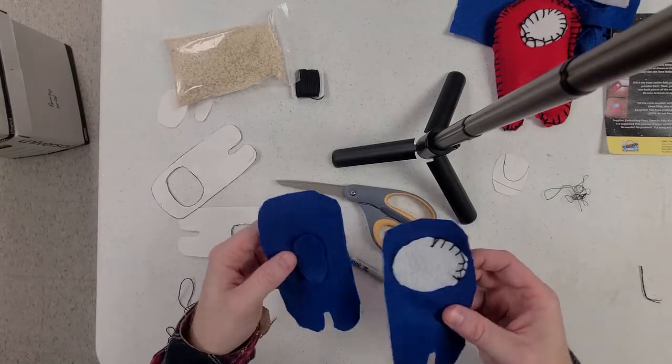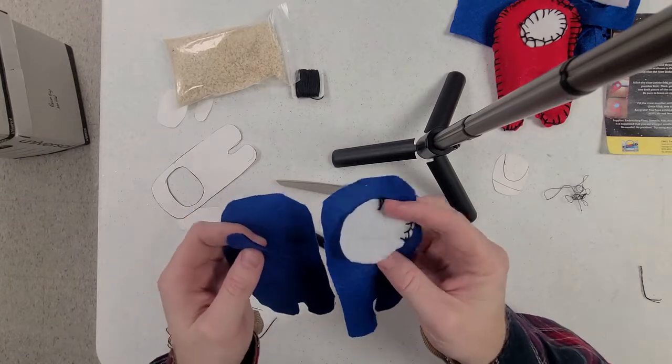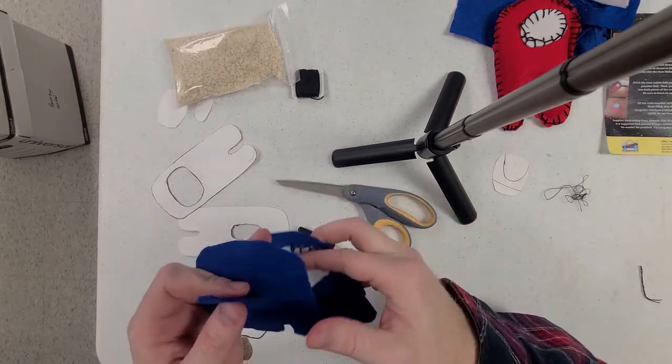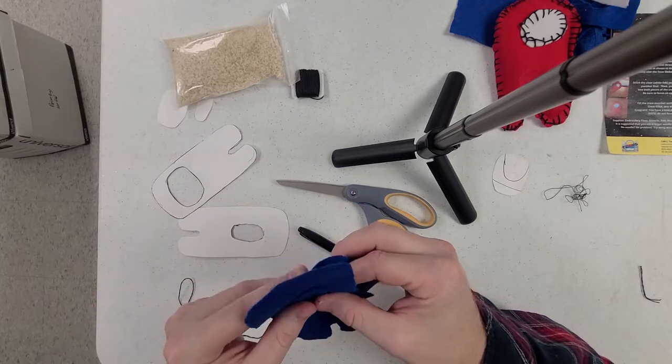Now as you can see, I've already cut out every piece that I need. I have two body pieces here. I have the visor, which is partially sewn on, and I have the little pack that goes on the back. So that'll be sewn on as well.